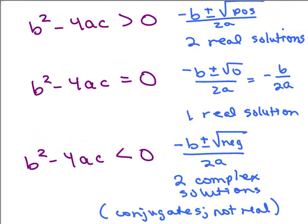So the discriminant tells you ahead of time about your solutions. If you just check the discriminant, you know whether your solutions are going to be two real solutions, one real solution, or two complex solutions. This is also going to help us when we do graphing — it's important to be able to tell whether a parabola goes through the x-axis. More about that later, but for now the discriminant tells us something about our solutions. Let's do a couple of problems.